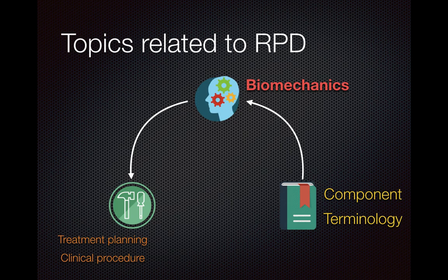This semester you are going to deal with the partial denture sections related to removable partial dentures. There are three specific topics. The first is about the components and terminology — you will hear a lot of things you've never heard before. The second is the biomechanical topic, covering the mechanical and biological aspects you need to understand. The third is related to treatment planning and clinical procedures. Without knowing all three, you won't be able to get familiar with removable partial dentures. We will go through these in lectures and in the sim lab.